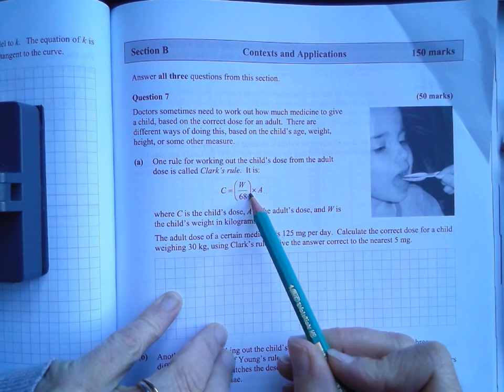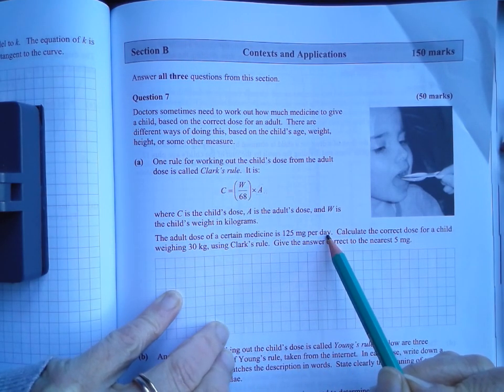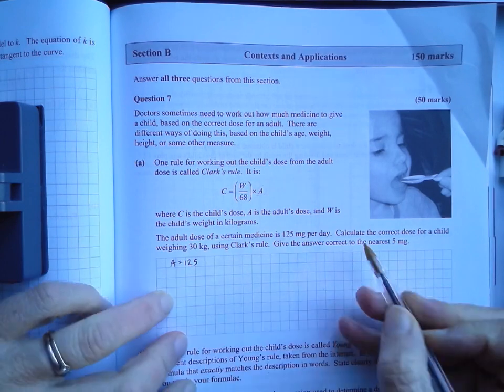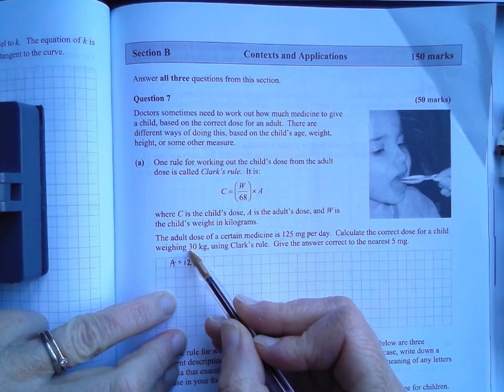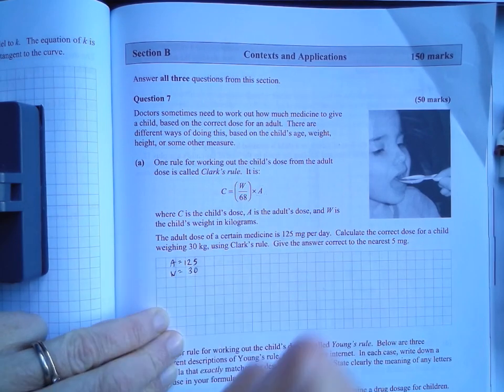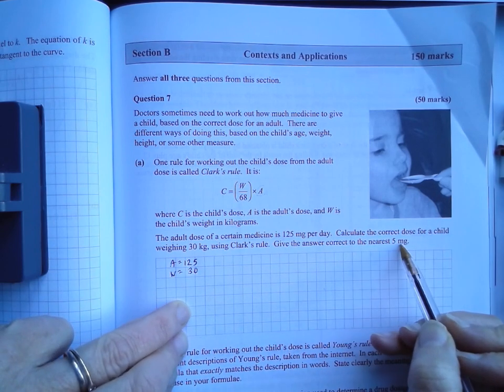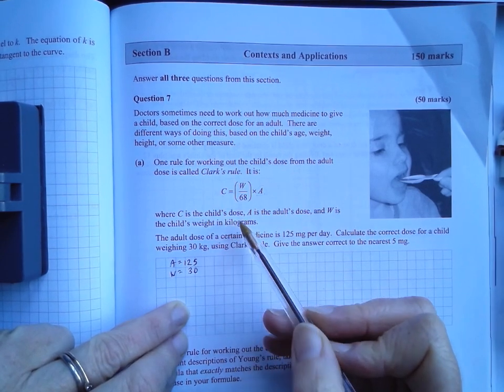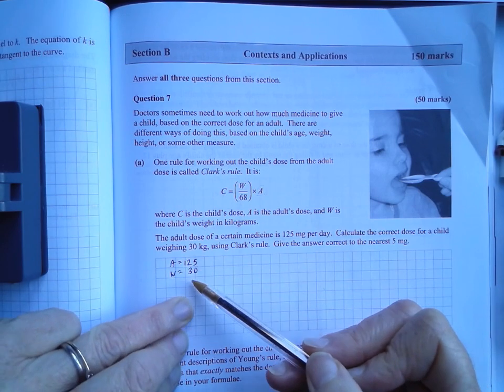And the weight is in kilograms. The adult dose of a certain medicine is 125 grams per day. So I would be writing down here A is equal to 125. Calculate the correct dose for a child weighing 30 kilograms. Now, the weight, a child of weight 30 kilograms. So here, that's W. So I'd be writing down W is equal to 30. Using Clark's rule, calculate the correct dose. Give the answer to the nearest 5 milligrams. I'm presuming that we don't need to worry too much about the units. Let's just see how it works out.